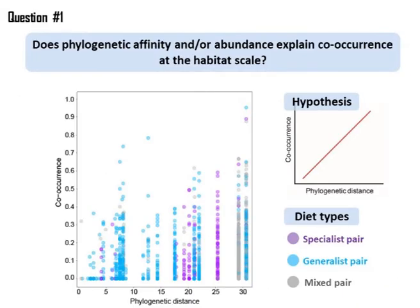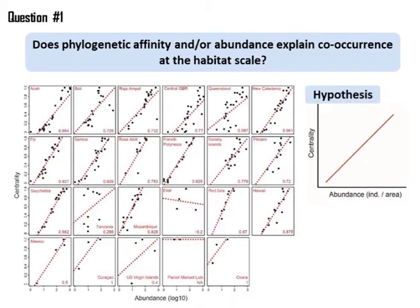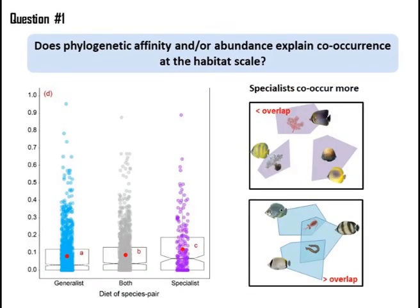Contrary to what we expected, we found no clear correlation between species co-occurrence and phylogenetic distance, suggesting that evolutionary processes do not influence species co-occurrence at the habitat scale. Instead, species abundance exerted a major influence on interspecific co-occurrences, providing support for the hypothesis of neutral processes resulting from random encounters among individuals. We also found that specialist species tend to co-occur more than generalists, probably due to less overlap in feeding resources.